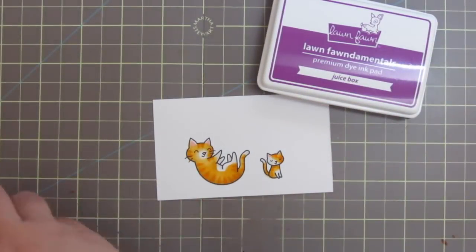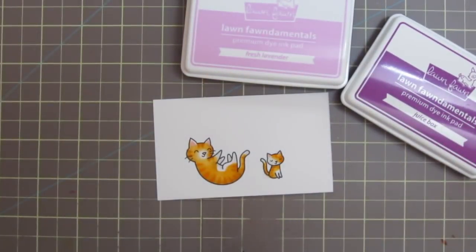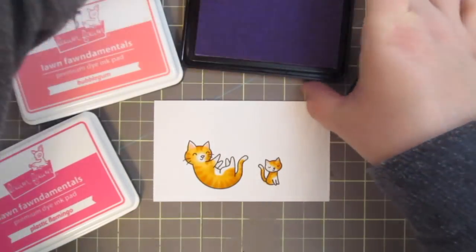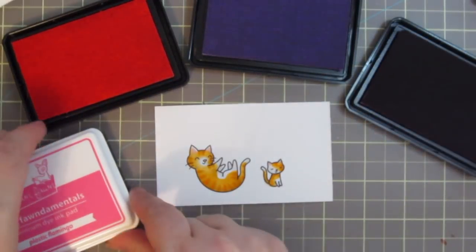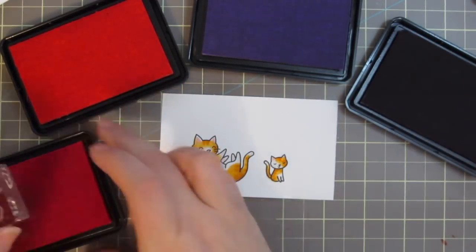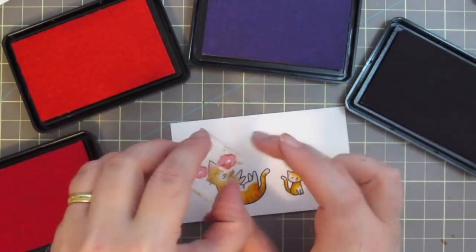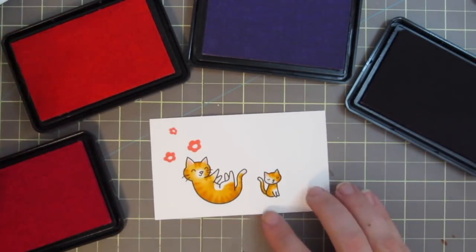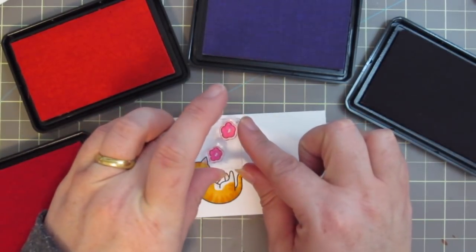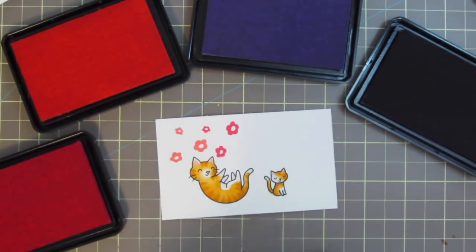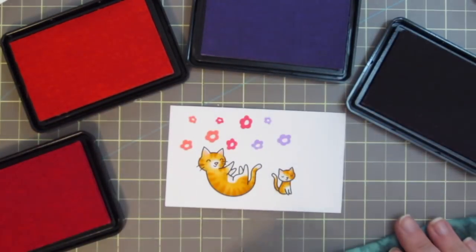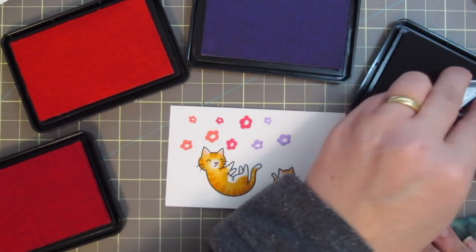Next, I'm going to take four different colors of Lawn Fawn ink. I'm using Juice Box, Fresh Lavender, Bubble Gum, and Plastic Flamingo. And I'm going to take the three little flowers that come in the Mom Plus Me stamp set, and I'm going to stamp out a whole bunch all around the cat images so that I can die cut those out. I'm using my Lawn Fawn Stamp Shammy to clean my stamps before I switch colors, so that I don't transfer any ink to the other ink pads. And then I will just fill up this entire white space until I have a whole bunch of flowers.